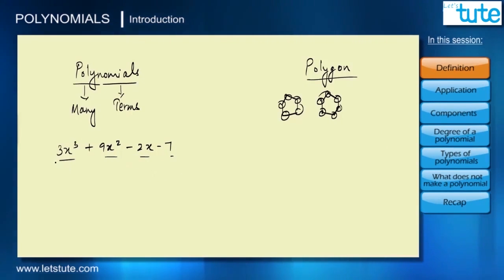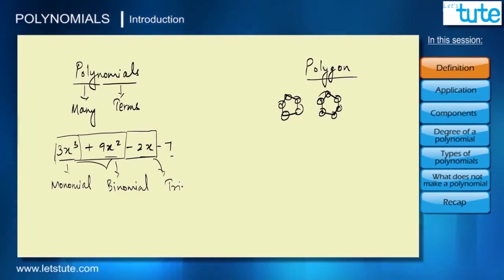What about expressions with less than three terms? If we only had 3x³, it would be called a monomial. If we had 3x³ and 9x², it will be called binomial. If we have three terms, it will be called trinomial.